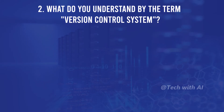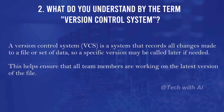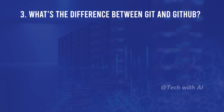What do you understand by the term version control system? A version control system is a system that records all changes made to a file or set of data so a specific version may be called later if needed. This helps ensure that all team members are working on the latest version of the file.